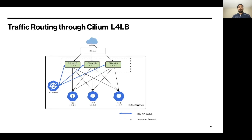Let me walk you through how traffic gets routed to the application pod through Cilium LB with an example. Let's say we have an application deployment of three replicas and a service with an external IP 2.2.2.2. This IP is a VIP, and in our case it's an anycast IP as well. With anycast IP, many Cilium LB nodes are responsible for it. The traffic to the Cilium LB nodes is load balanced through ECMP. When a client sends a request to 2.2.2.2, the request lands on one of the Cilium LB nodes. The Cilium LB node is directly hooked to the Kubernetes API — it knows about the backend pods and where to route. With Maglev consistent hashing, it picks a pod and forwards the packet to the pod.